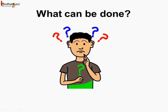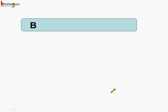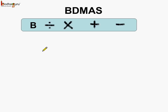So what can be done? Here, the DMAS rule doesn't give us the right answer. We need to use brackets so that certain operations can be performed first when the order is not according to DMAS rule. Now, we have the order such as: solve the operations in the bracket first, then the normal DMAS rule — that is division, followed by multiplication, followed by addition, then subtraction. This rule is called PDMAS rule, and it is the modification of DMAS rule.